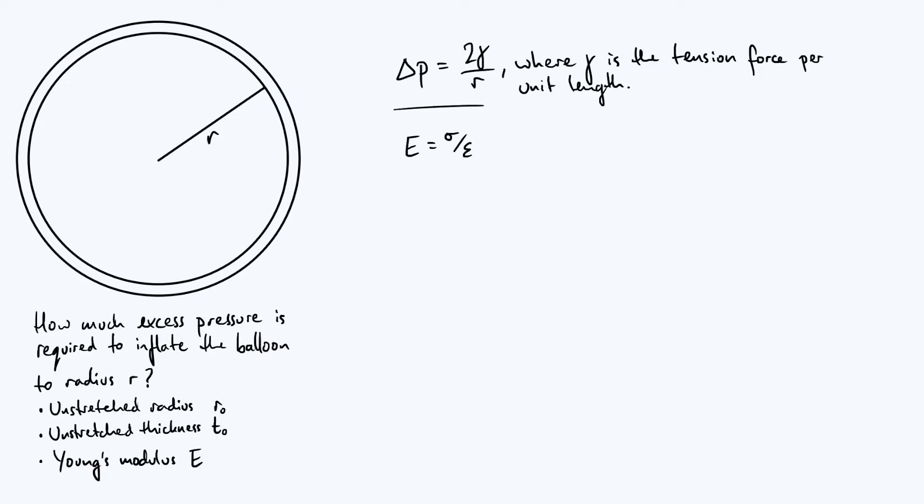This is a useful thing to consider in this context because ultimately what it's doing is linking an applied force to the amount by which the object stretches, and therefore if we do some algebraic manipulation and introduce some other parameters, we're going to be able to turn this definition of the Young's modulus into a relationship between γ and R.